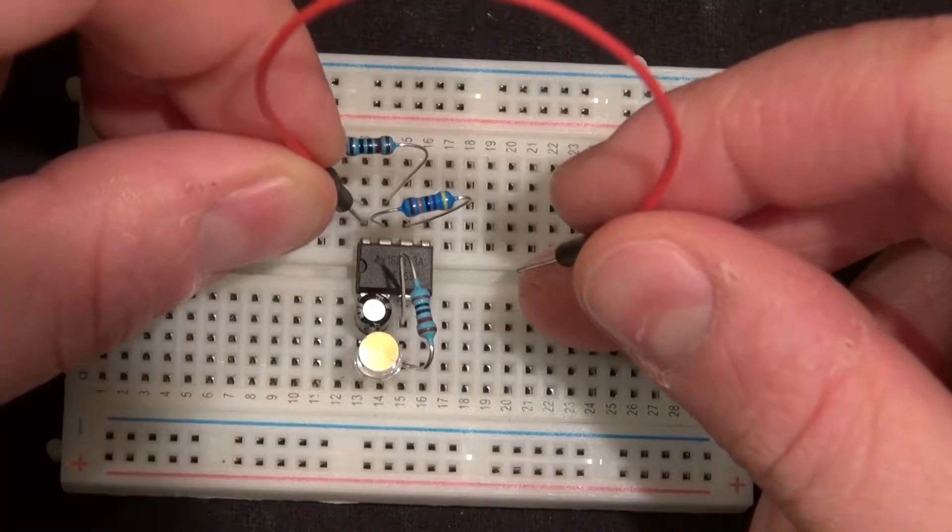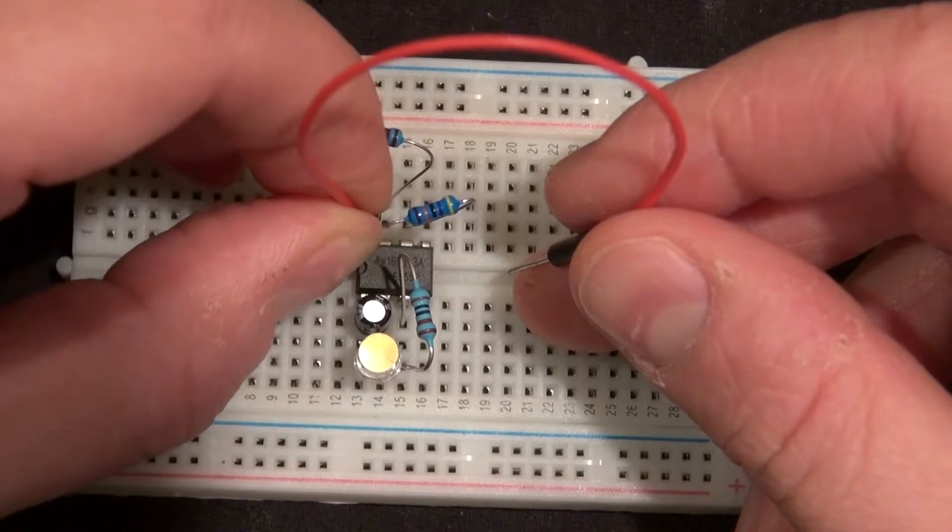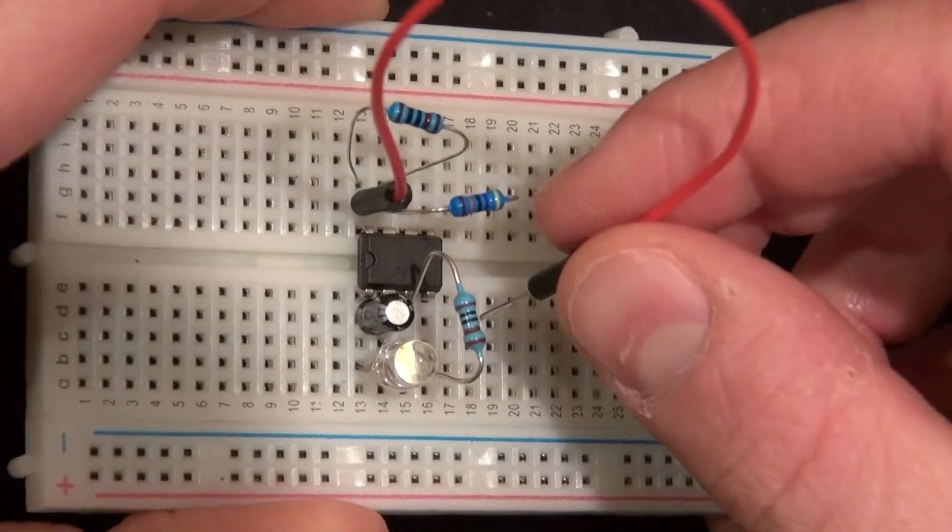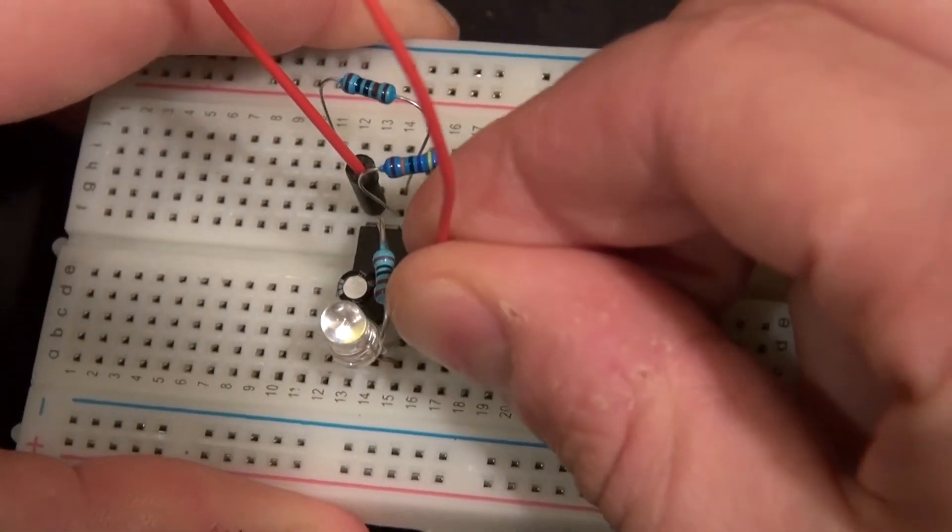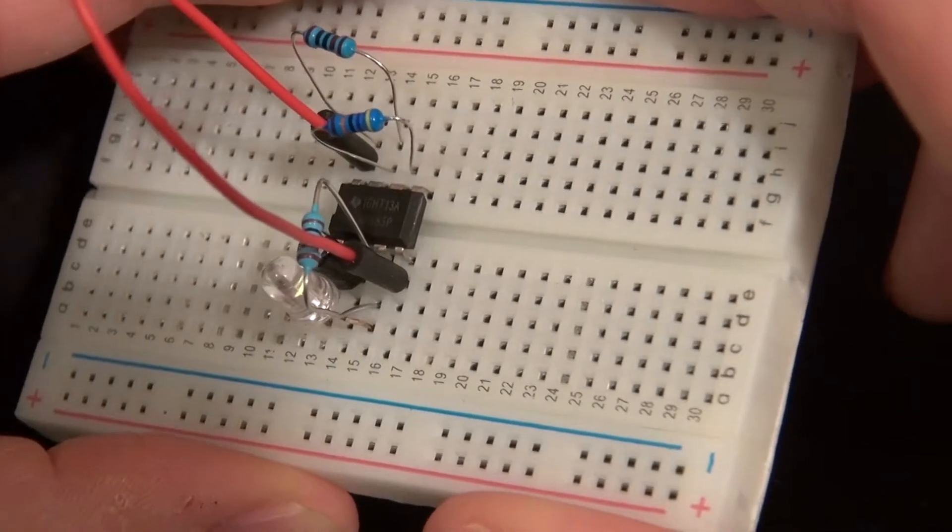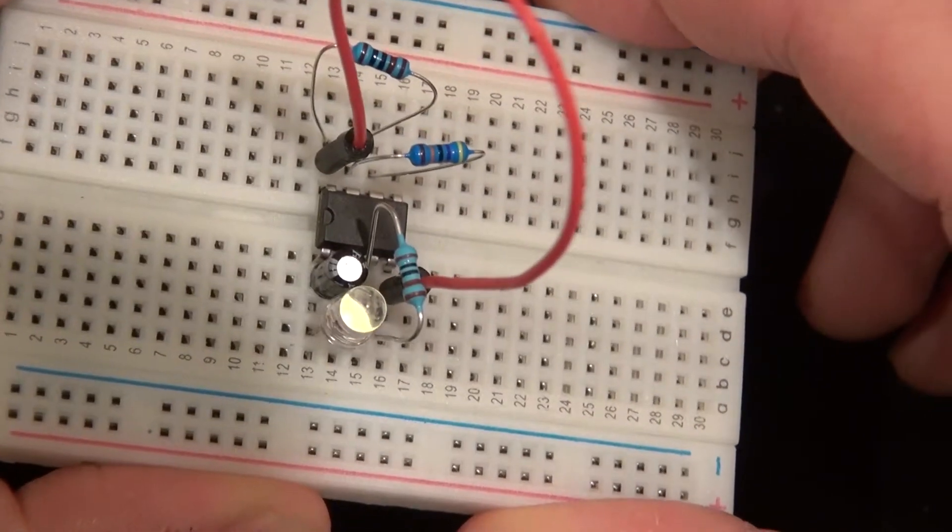Now take a jumper cable and connect pin 8 to pin 4. Pin 8 to pin 4. There you go, 8 and 4 are connected.